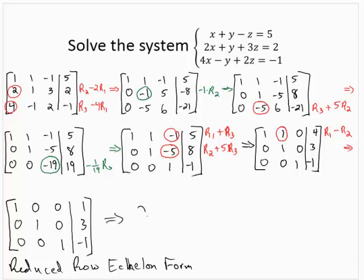In fact, this tells us that x equals 1, y equals 3, and z equals negative 1 is the solution of the system. Or we could write that as the ordered triple 1, 3, negative 1.